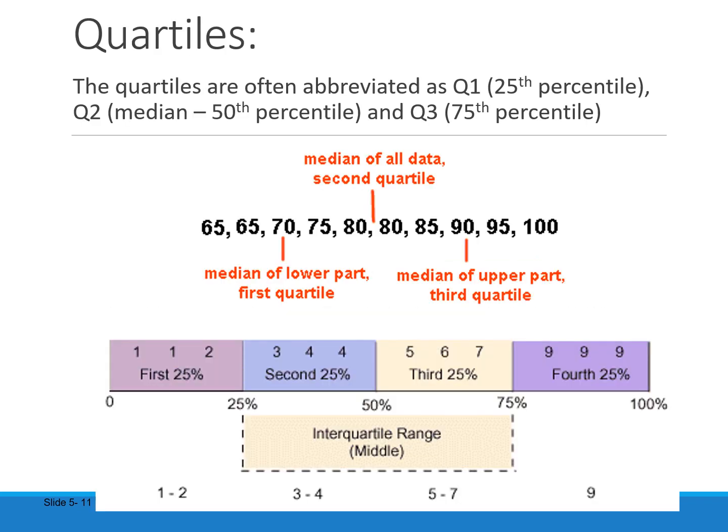Now let's go back to quartiles. There are three quartiles: Q1, Q2, and Q3. Q1 is the 25th percentile, Q2 is the 50th percentile (just the median), and Q3 is the 75th percentile. We can find these manually, but we're going to use our TI-84s or TI-89s and let those calculators do the work.